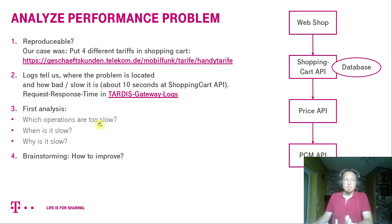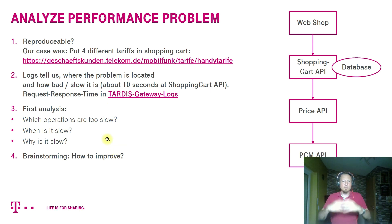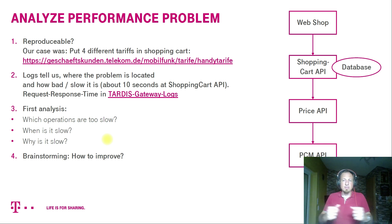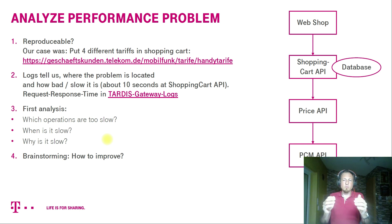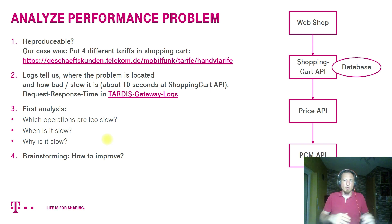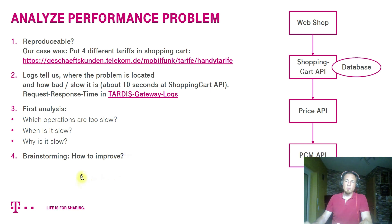After understanding which operations are too slow, we also understood when it is too slow: when we have more than four tariffs. The reason is that with four different tariffs, the shopping cart data structure in JSON representation gets really big, because a tariff is not just one item in the shopping cart — it is a bunch of items, because it has so many different options like multi-SIM, roaming option, and so on. So we started to do a brainstorming together to generate as many ideas as possible for how we could improve the situation.